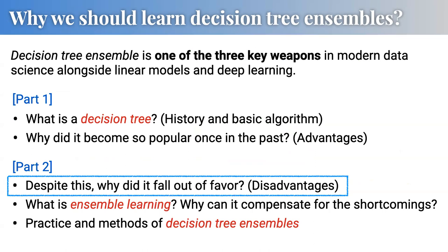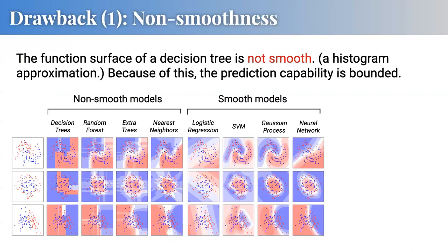Today I want to start with the disadvantages of decision tree learning algorithms. First, one very clear issue is that the decision tree boundary is non-smooth. These are decision tree ensemble boundaries I will cover today — the decision boundary of decision trees is quite non-smooth, so because of this limitation, predictive power is limited.